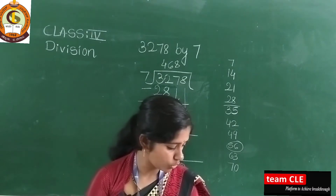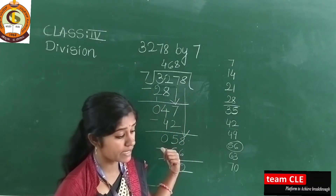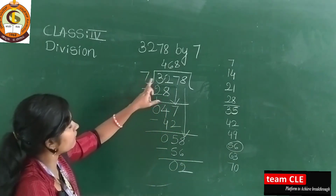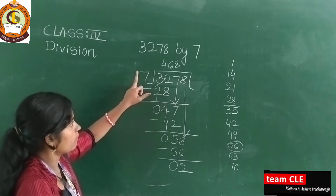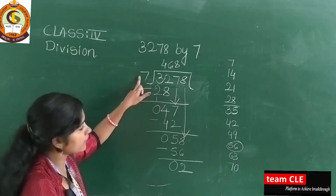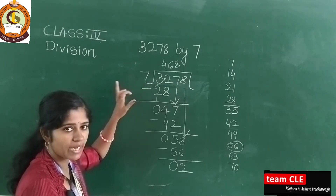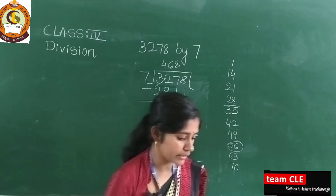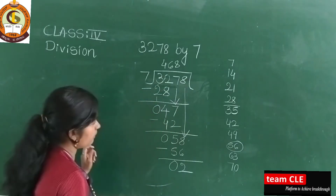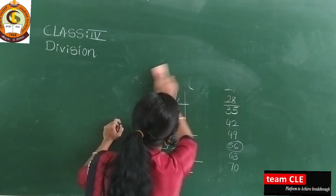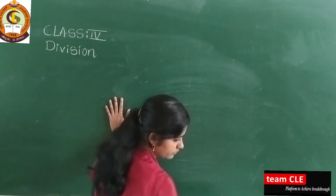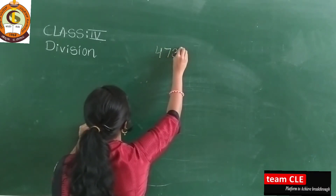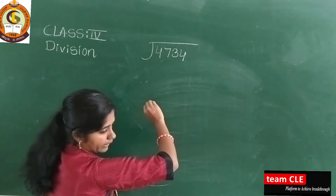Let us take a few more examples. Dear students, if you practice these examples then only you will be able to solve problems with two-digit divisors — which we will see in the next video. For now, let us take an example: 4734 divided by 6.